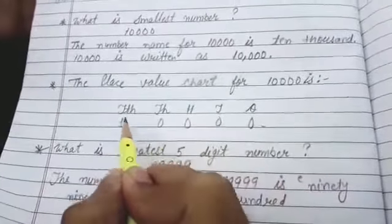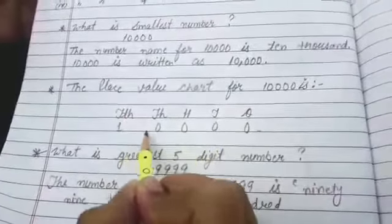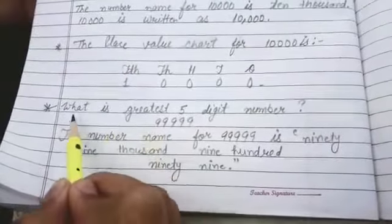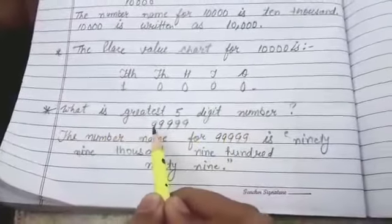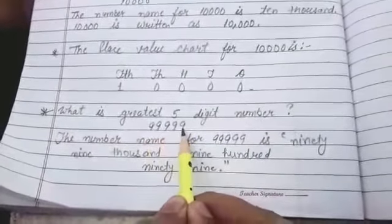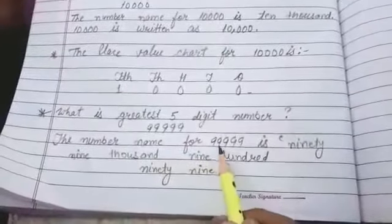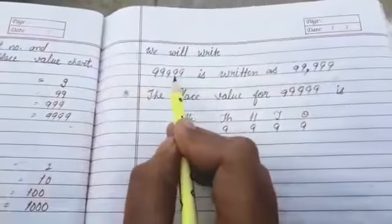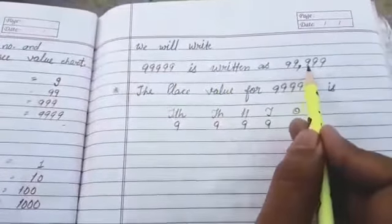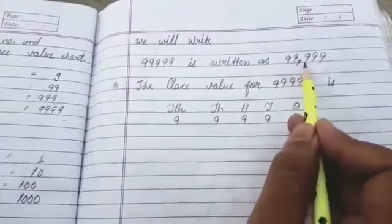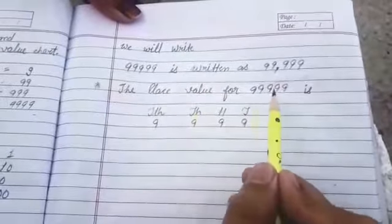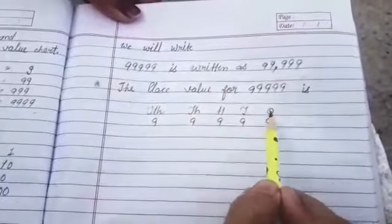Now greatest number we will write greatest 5 digit number is 99999. The number name for 99999 is ninety nine thousand nine hundred ninety nine. How we will write 99999 is written as 99,999. The place value for 99,999 is ones then tens then hundreds then thousands then 10,000.